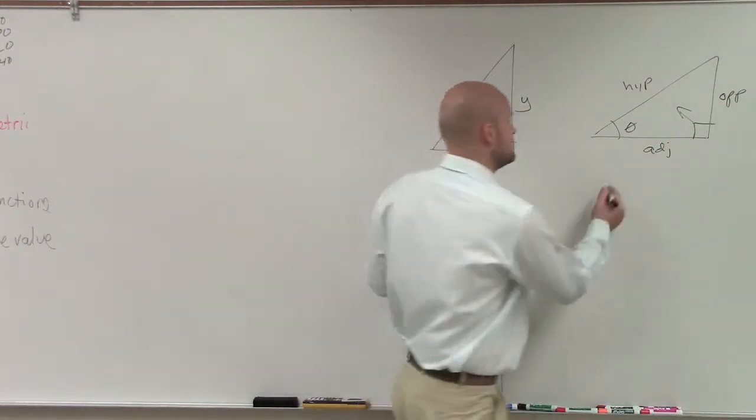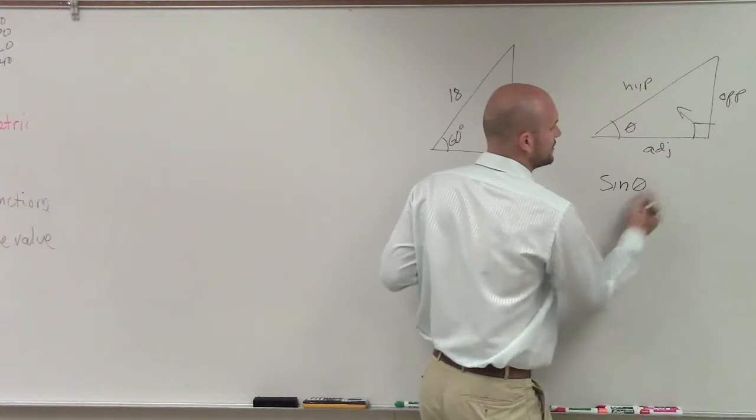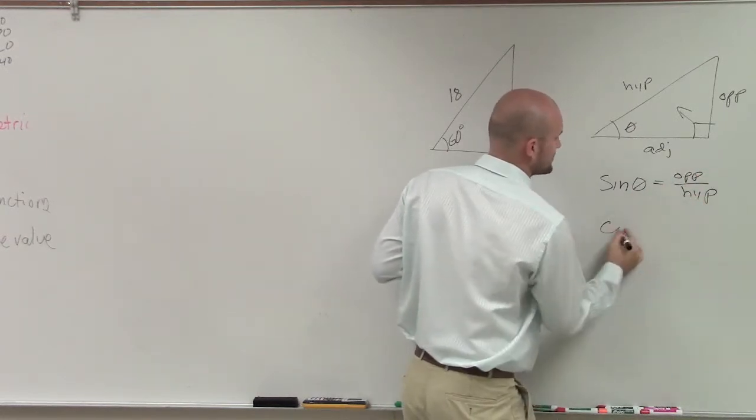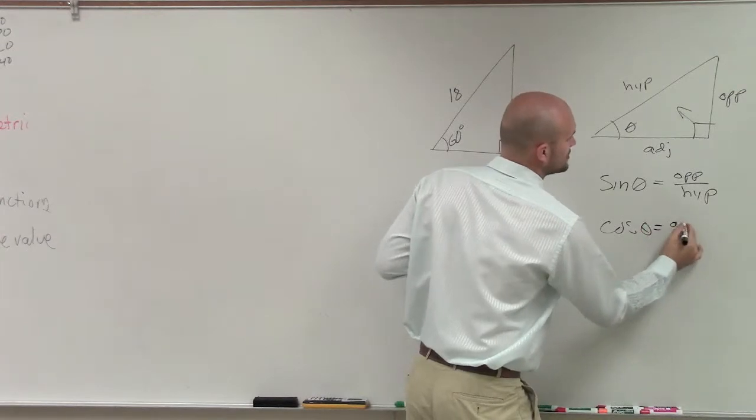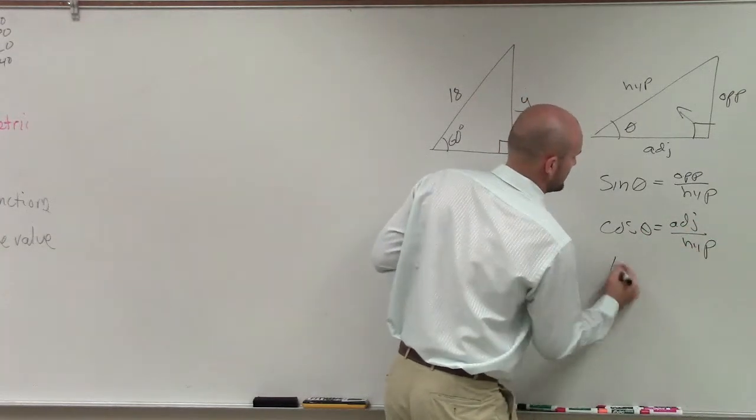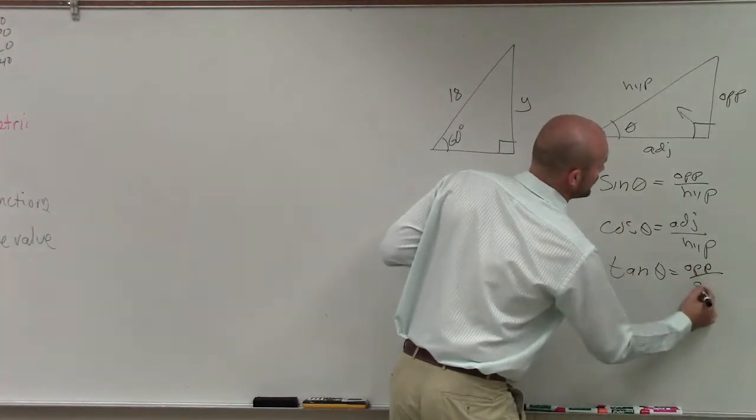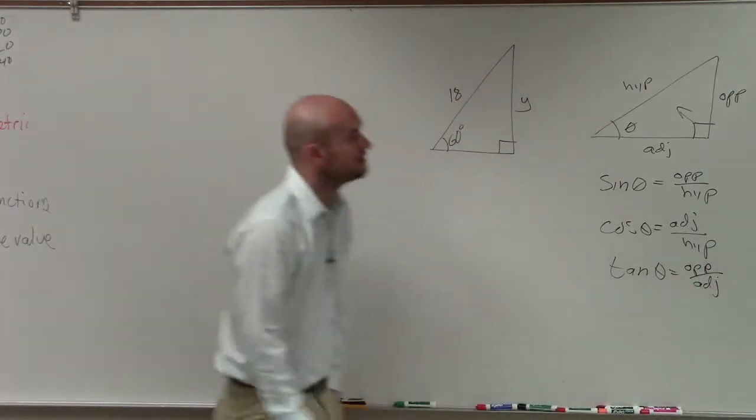Sine. Remember, the sine of an angle theta equals opposite over hypotenuse, cosine of theta equals adjacent over hypotenuse, and tangent of theta equals opposite over adjacent.